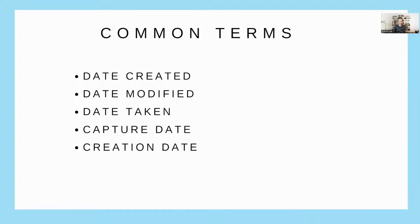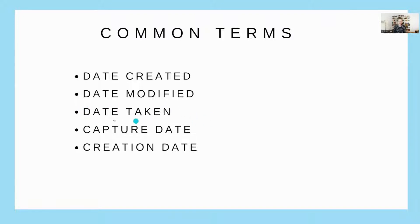Here are some common terms for what we're looking for when we see dates on our photos: date created, date modified, date taken, capture date, creation date. It can get super confusing in terms of what dates you want to use when you're actually sorting out your photo mess. I typically say that we should be using date taken, because date created, date modified, and creation date can often mean the date that the photo was brought onto your computer. Date modified can also apply if you edited the photo. So the one we're really looking for is date taken, sometimes also known as capture date.